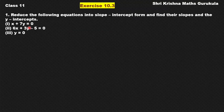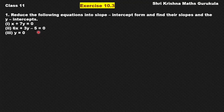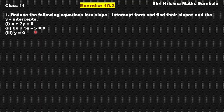Now if you look at the equation, what form is it in? It is in the general form of a straight line, that is the form ax plus by plus c equals 0. We are going to reduce this form to slope-intercept form.